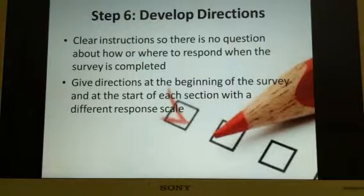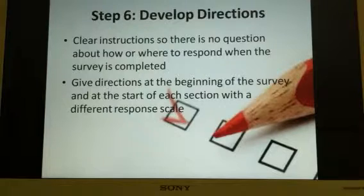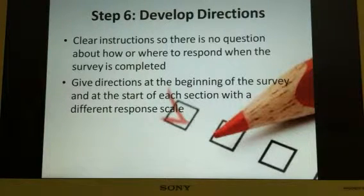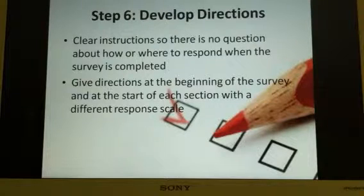Step six: develop directions. Make clear instructions so there is no question about how or where to respond when the survey is completed. Give clear directions at the beginning of the survey and at the start of each section with a different response scale. Make sure there will be no confusion in the ability for your participants to make an answer.